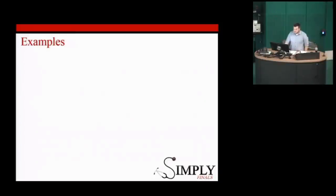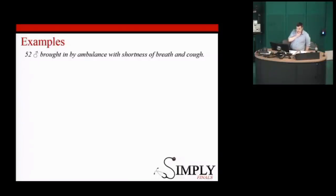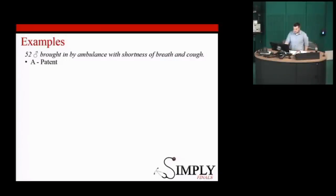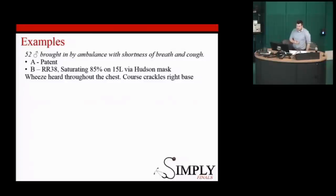Let's go through some examples. A 52-year-old gentleman is brought in by ambulance with shortness of breath and cough. We're going to do an ABCDE assessment. We talk to him and he responds — airway is clear. Breathing: he's tachypneic, saturating 85% with 15 litres through a Hudson mask, there's wheeze throughout the chest, and there are crackles at the right base.